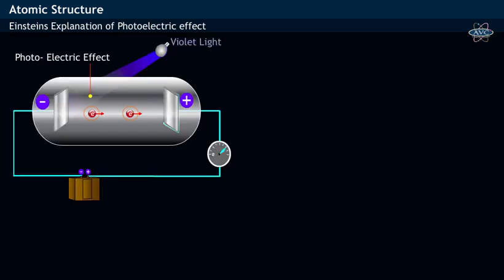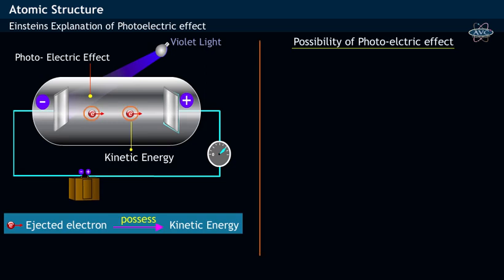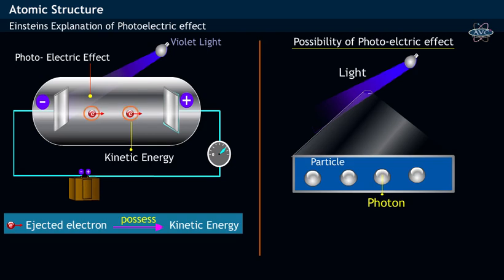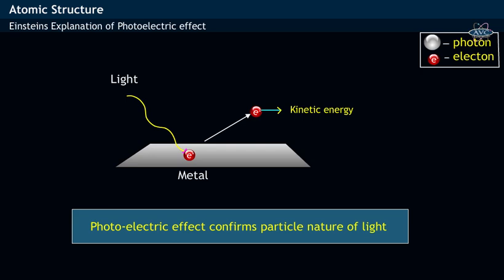In photoelectric effect, the ejected photoelectrons have kinetic energy. This is possible only when light is considered as a particle. That is, the particle photon having certain energy collides with the particle electron, transfers its energy and thereby makes the electron possess kinetic energy. Thus, photoelectric effect confirms the particle nature of light.